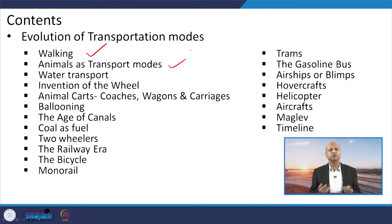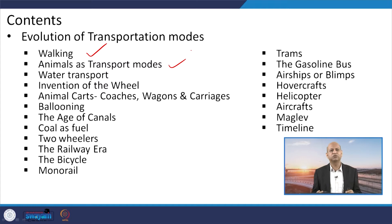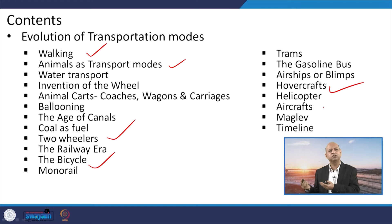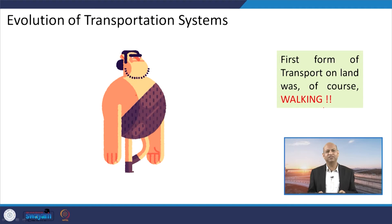Human beings dreamed of flying like birds, leading to the invention of aircraft and ballooning. The use of fossil fuels was a big revolution in transporting from one place to another. Then two-wheelers came, and the railway era arrived when steel was used and coal was used for producing steam. Bicycles, monorails, trams, gasoline buses, hovercrafts, helicopters, aircraft, and now even spaceships are available. How these transportation modes evolved is the interesting journey we will go through in today's lecture.